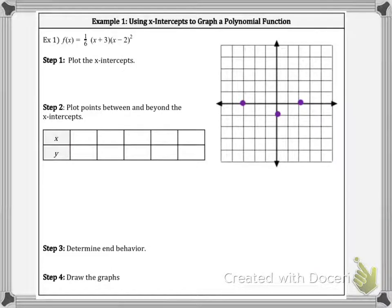Let's take a look at this example here. We're going to use the x-intercepts to graph this polynomial function. We have one-sixth times x plus 3 times x minus 2 squared. The first thing is we want to plot the x-intercepts. We have an x-intercept at negative 3 using the zero product property.